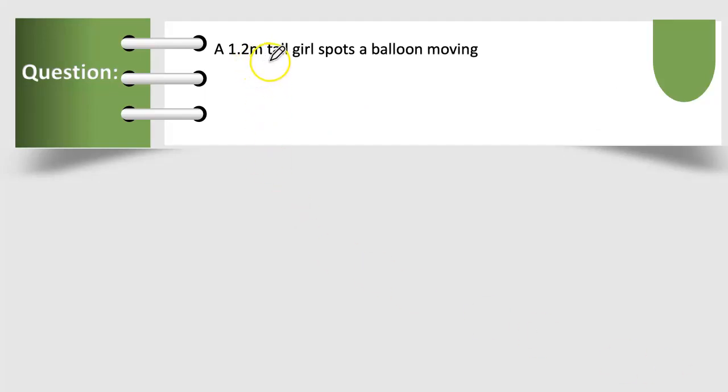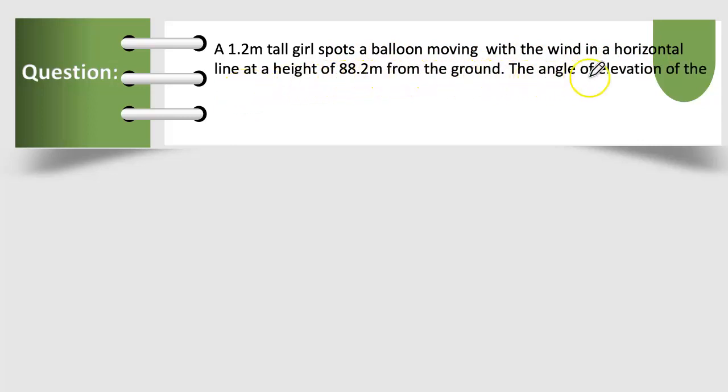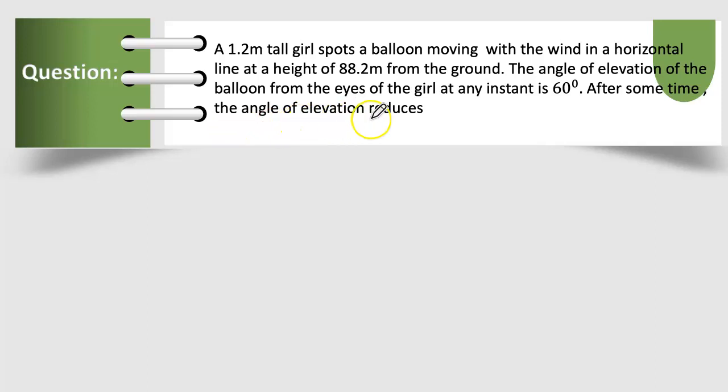A 1.2m tall girl spots a balloon moving with the wind in a horizontal line at a height of 88.2m from the ground. The angle of elevation of the balloon from the eyes of the girl at any instant is 60°. After some time, the angle of elevation reduces to 30°. Find the distance travelled by the balloon during the interval.